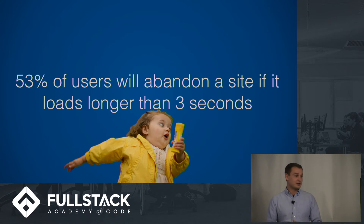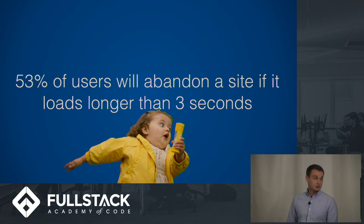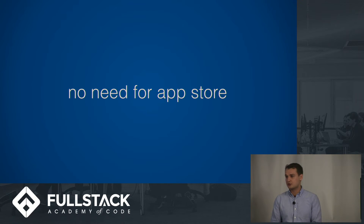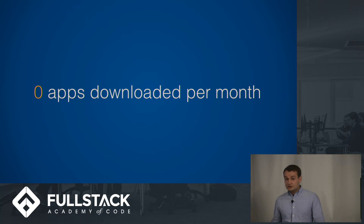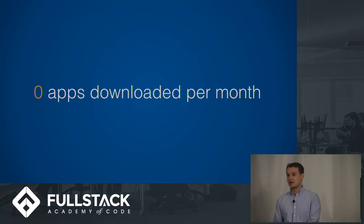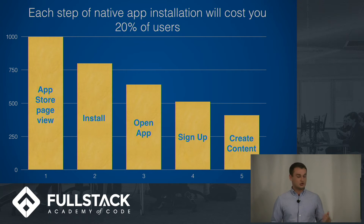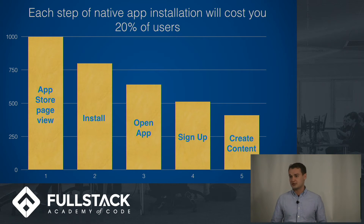Why do you want to use Progressive Web Apps? By the statistics, 53% of users will leave your website if it takes more than 3 seconds to load — using service workers allows you to make it really fast. Also, you don't need the app store; with one press you can add it to the home screen. The average user downloads zero apps per month but visits around 100 websites per month. Every additional step to install an app costs you 20% of users, so being able to do it in one step means you retain all potential users.